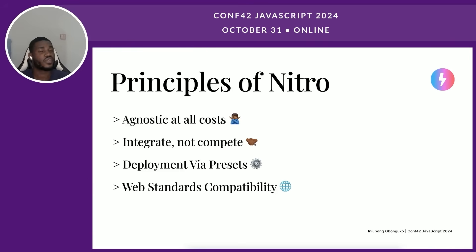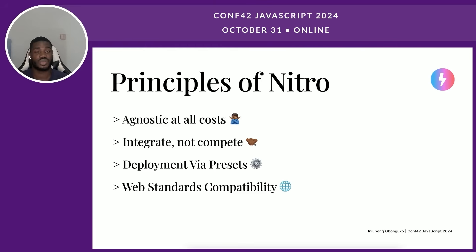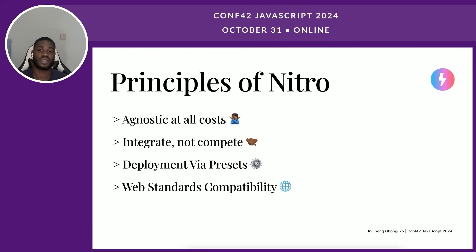Let's talk about Nitro's principles. The first one is agnostic at all costs. NitroJS is not affiliated with any large corporations, and there is no single person behind Nitro whose aim is to lock you into the ecosystem. Nitro is agnostic — it can run with any runtime, such as Node.js, Bun, or even service workers. The aim of Nitro is to integrate, not compete. NitroJS has an open API which anyone can use for their project and deploy anywhere they want, seeking to collaborate with the ecosystem rather than compete.